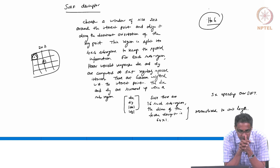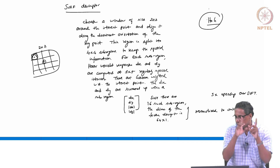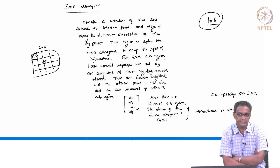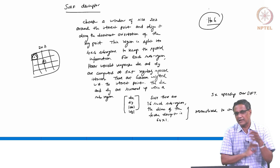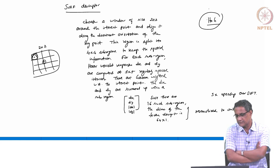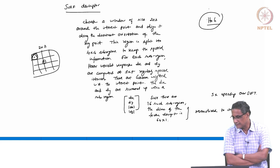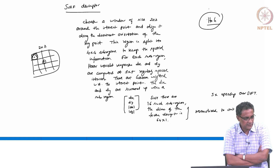HOG was originally proposed by Dalal and Triggs — one of them is actually Indian. They proposed it for human detection, which is why the aspect ratio is like 1:2, tailored towards humans, though it has since been used for other things. It is much simpler than these other descriptors but more dense. From the next class, we will start geometry.